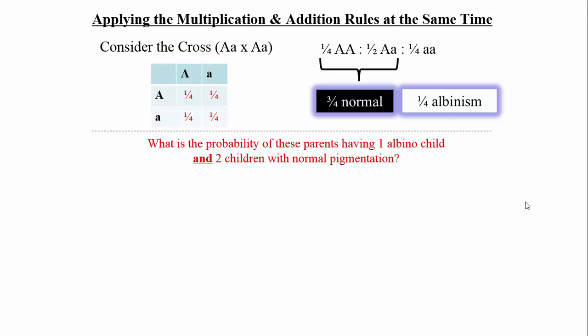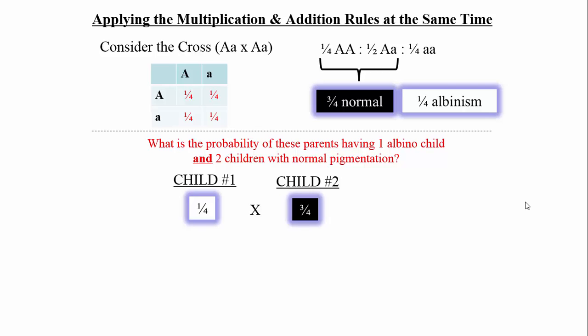The question is: what is the probability of these parents having one albino child and two children with normal pigmentation? Notice that no order is specified — this is key because it requires both the multiplication and addition rules. In scenario one, child one is albino (one-quarter), child two has normal pigmentation (three-quarters), and child three has normal pigmentation (three-quarters). Multiplying: one times three times three equals nine, and four times four times four equals sixty-four, giving 9/64.